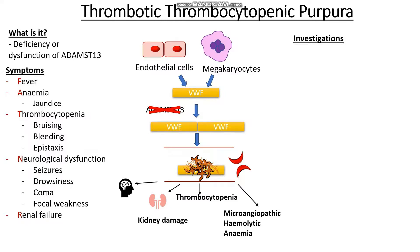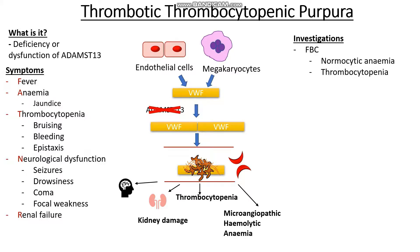So what kind of investigations are we going to want to do? The first thing we do is a full blood count, and we're going to see a normocytic anemia, because we don't have an issue with the formation of the blood cells or the composition of the blood cells — it's more that they're being split because of these sharp fibrin sheaths. We're also going to see a thrombocytopenia.